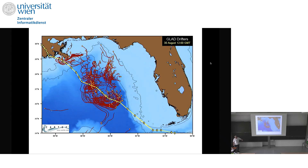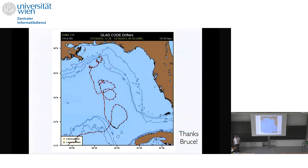Interestingly, all these drifters that ended up on the coast — the real oil did also. Here's one trajectory showing very small oscillations, mostly inertial with some tidal influence, and then down here we get into situations where there are larger eddies.